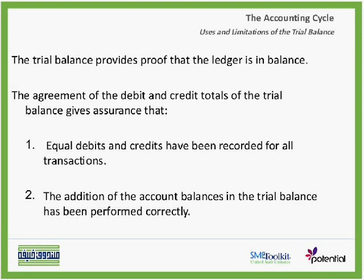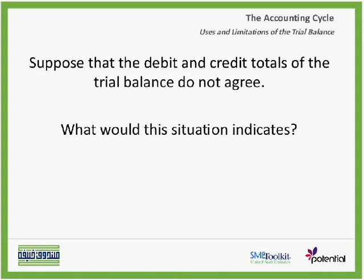Equal debits and credits have been recorded for all transactions, and the addition of the account balances in the trial balance has been performed correctly. Suppose that the debits and the credit totals of the trial balance do not agree — we have a problem: a mismatch between the debit balances and the credit balances.